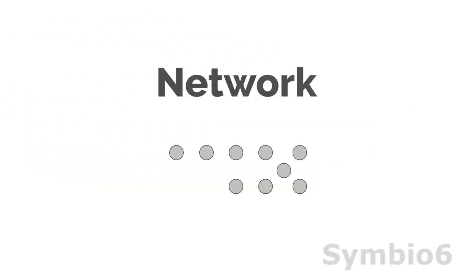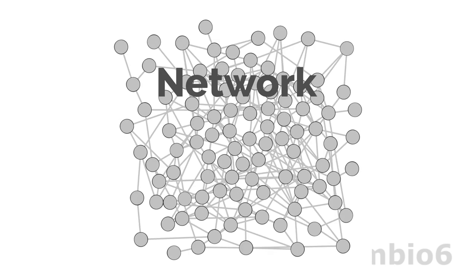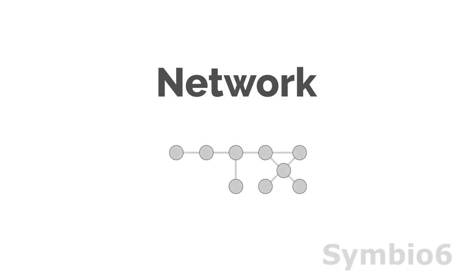In a network we not only have data points — so-called nodes — but also links between them. Usually these networks are large and hard to fathom. Fortunately, there are also measures of centrality for a network that can help us understand this network and show the bigger picture.